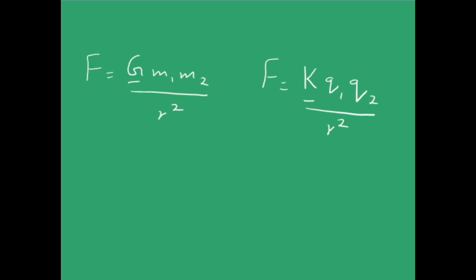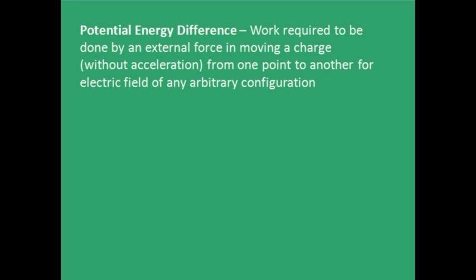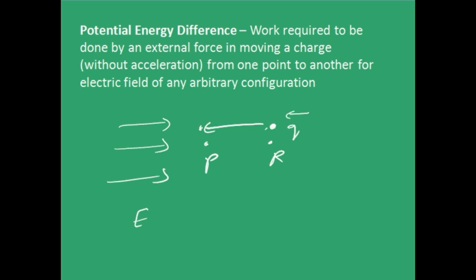So just like gravitational force, electrostatic force is also a conservative force. Now let me tell you the definition of potential energy difference. It is the work required to be done by an external force in moving a charge from one point to another. For a given electric field — say you have an electric field and two points P and R — if you want to move a charge plus Q from R to P, you apply some external force which is just equal to the electric force but in the opposite direction. It is just equal to the electric force because if it is more than that, the charge gets accelerated and that should not happen.